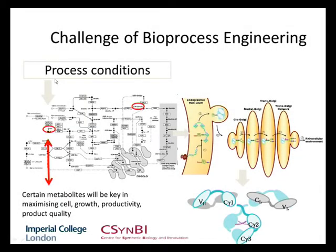The application area that we're working in is bioprocess engineering, specifically the production of biopharmaceuticals using mammalian cell culture. The real challenge that we face is that the biochemistry in this situation is very poorly understood. We do know that if we feed the cells different things in different combinations, they'll behave differently, and that certain metabolites will be key in maximizing the amount of biomass we get, the productivity of those cells in terms of protein production, and the end product quality. The problem is that we don't really understand exactly the detailed biochemistry that works behind that.